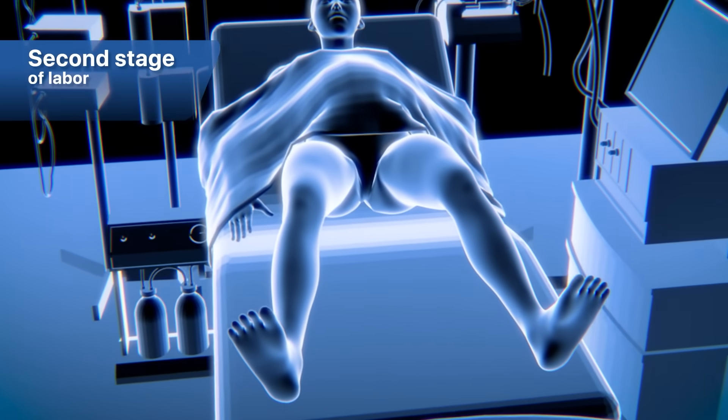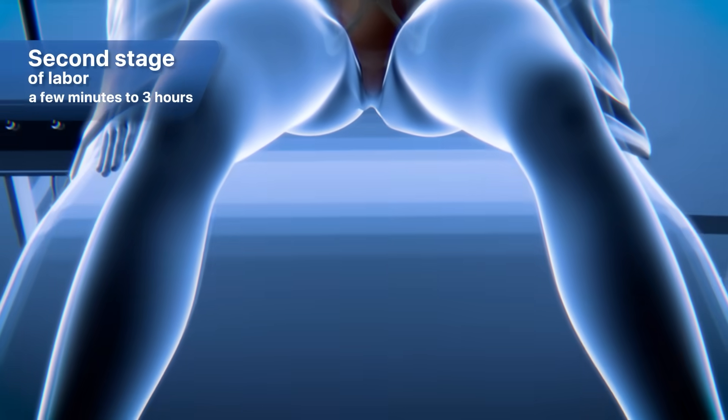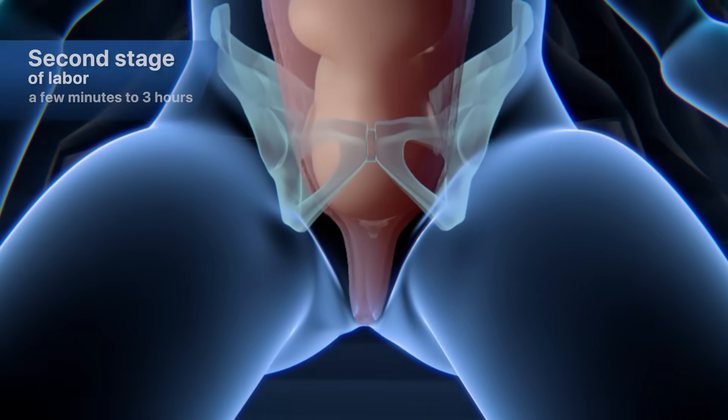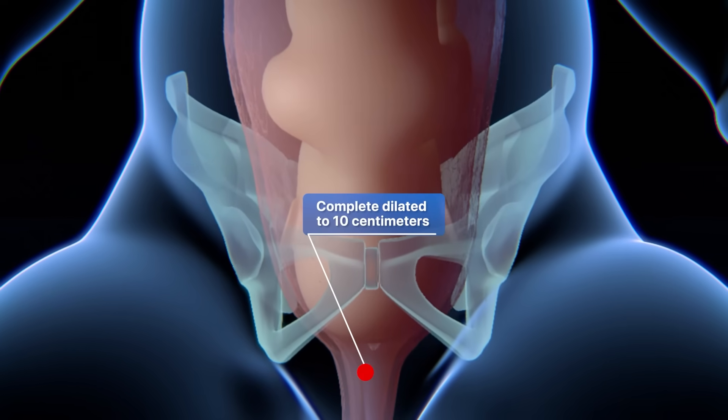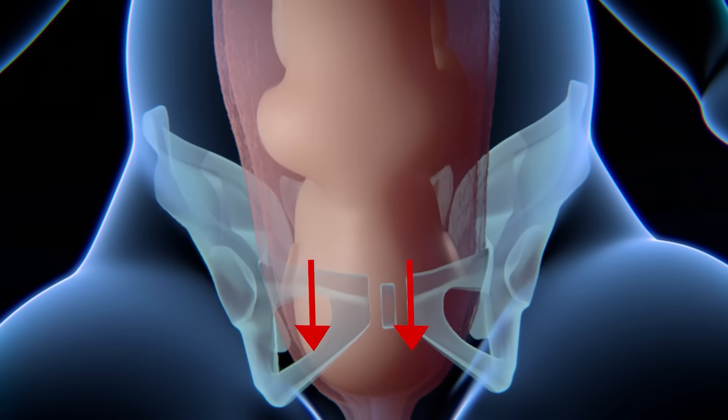At the beginning of the second stage of labor, which can last from a few minutes to 3 hours, the cervix is fully dilated to 4 inches and by this time, the baby's head will have moved beyond the cervical opening into its birth canal.